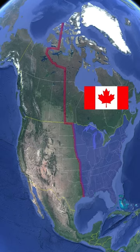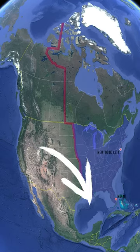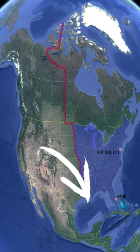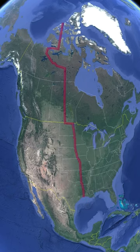Canada would get 33 American states on the east, gaining cities like Miami and New York, and keeping its own cities Toronto, Montreal and Ottawa. It also gets all five Great Lakes to itself, but loses access to the Pacific Ocean.